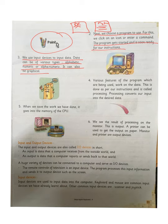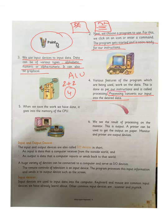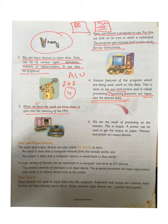Step four: various features of the program work on the data as per instruction — this is called processing. Processing converts our input into the desired output. For example, if we input two plus two, the ALU processes it and gives the answer four. Step five: when we save our work, it goes into the memory of the CPU. We should always save our work to avoid losing it.